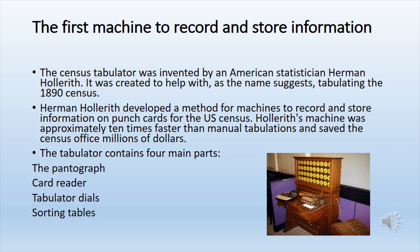The tabulator contained four main parts. The pantograph was how the Census Bureau transferred data from their surveys onto the punch cards. The card reader took the freshly punched cards from the pantograph and positioned them between two metal plates. The user would then press the plates together — whenever there was a hole, a metal pin would pass through and connect with mercury on the other side, completing the circuit and moving a counter dial forward. There were 40 dials that kept track of different information such as gender, race, and the like.